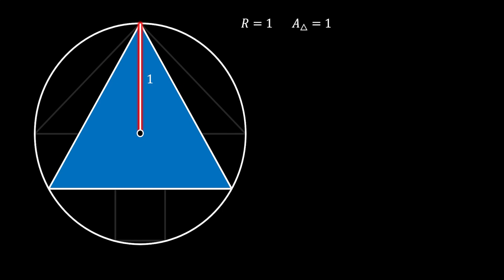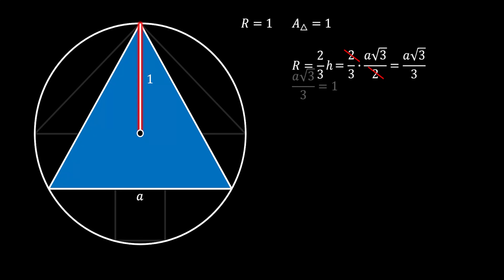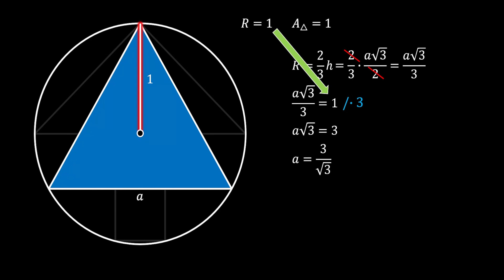We can label the side of this equilateral triangle as A. We can also notice that the red line represents the circumradius of this triangle. We know that the circumradius of the equilateral triangle is equal to 2 thirds of the height of the triangle. The height of the equilateral triangle is equal to the base times square root of 3 over 2. So if we substitute this value and simplify, we get that our radius is equal to the side times square root of 3 over 3. We know that the radius equals 1, and if we substitute and multiply everything by 3, we get that the side of our equilateral triangle A is equal to square root of 3.